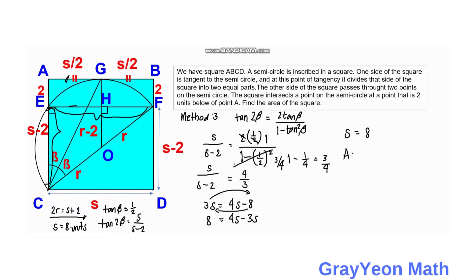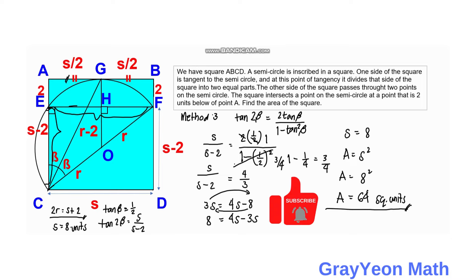Knowing S equals 8, the area equals S squared, so area equals 8 squared, which is 64 square units. Thank you for watching until the end of the video. Please like the video if you enjoyed the solution, subscribe to the channel, and hit the bell icon to be updated on more math videos.